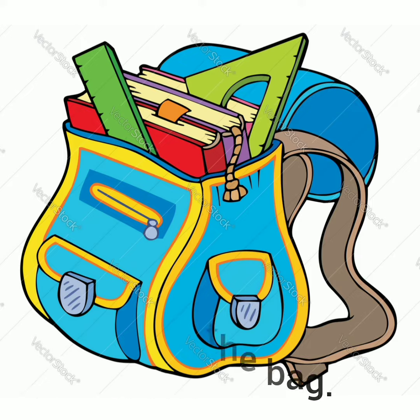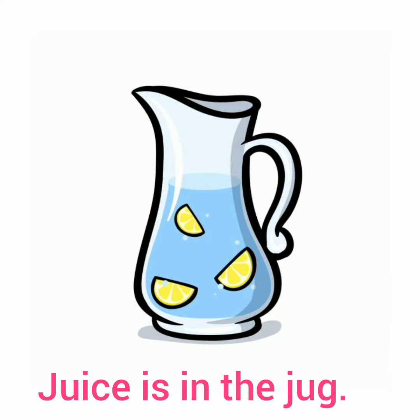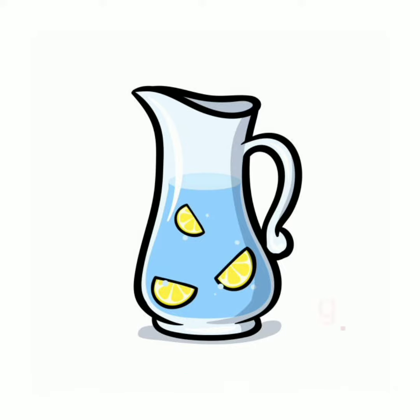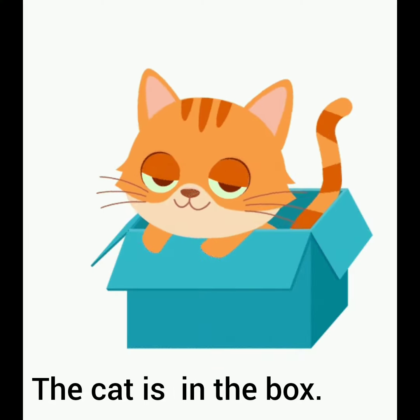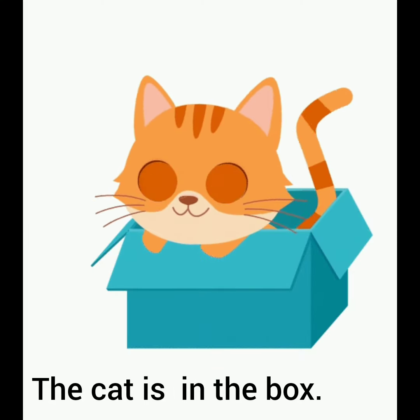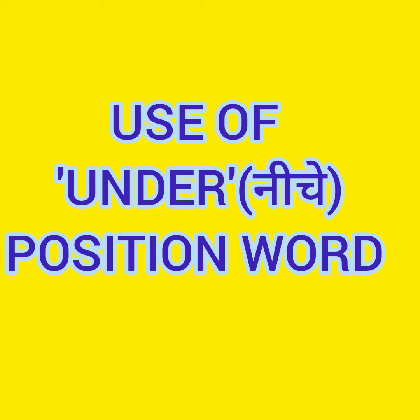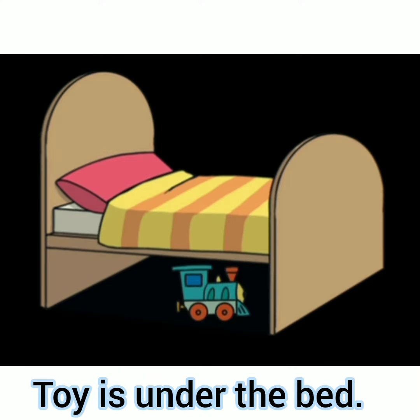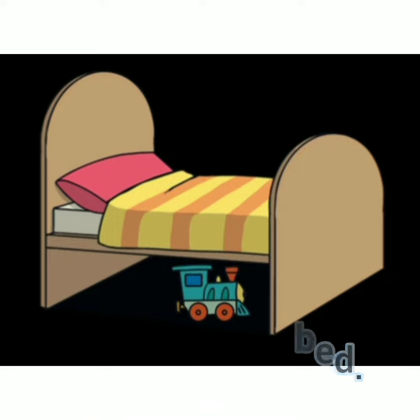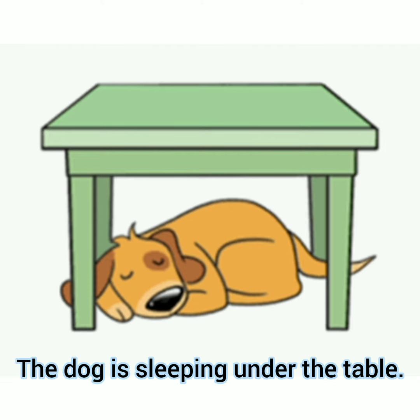Juice is in the jug. The frog is in the pond. The cat is in the box. Now let's learn the use of 'under' — position word. The toy is under the bed. The dog is sleeping under the table.